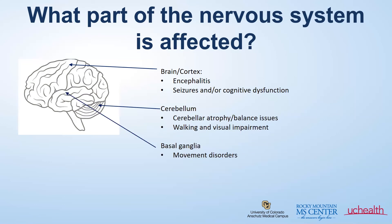When the basal ganglia is involved, in the deep part of the brain, we can see problems with movement disorders — jumpy or jerking movements that are hard to control, or slow movements. These can include tremors or syndromes that can mimic Parkinson's disease.